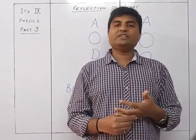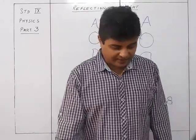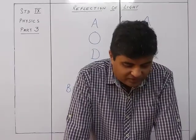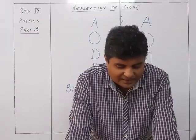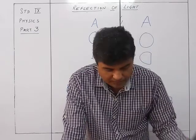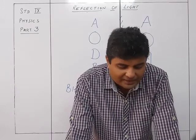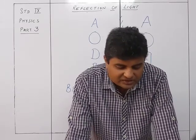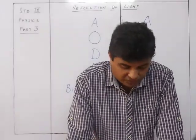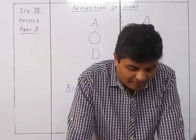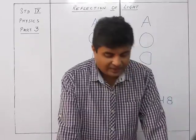That is why the letters on the front of an ambulance are written laterally inverted, so that the driver of the vehicle moving ahead reads the word correctly in their rearview mirror and gives way to the ambulance first. The image formed by a spherical mirror is also laterally inverted.